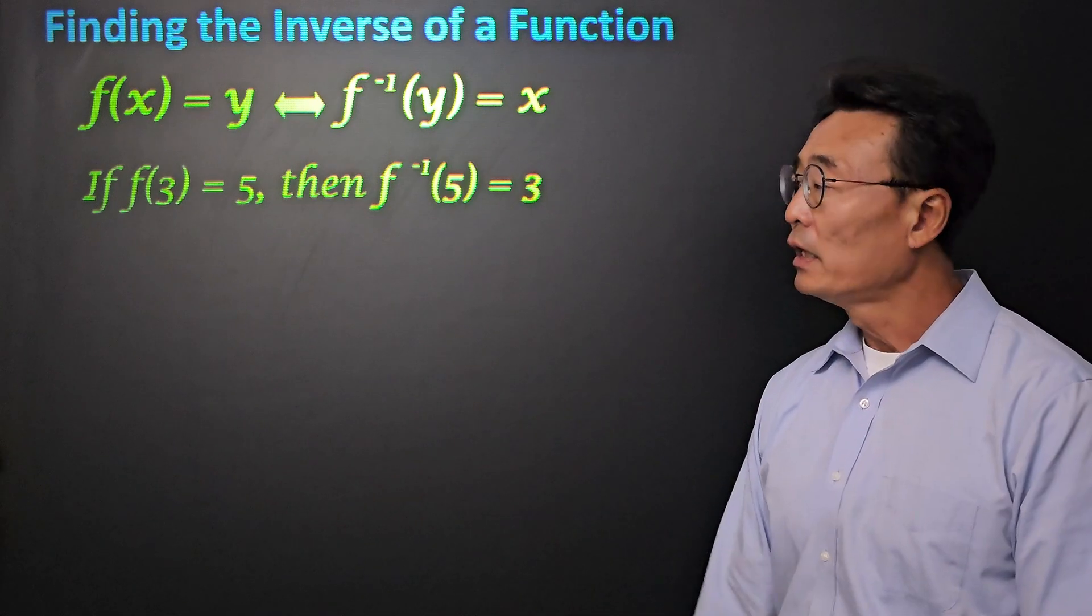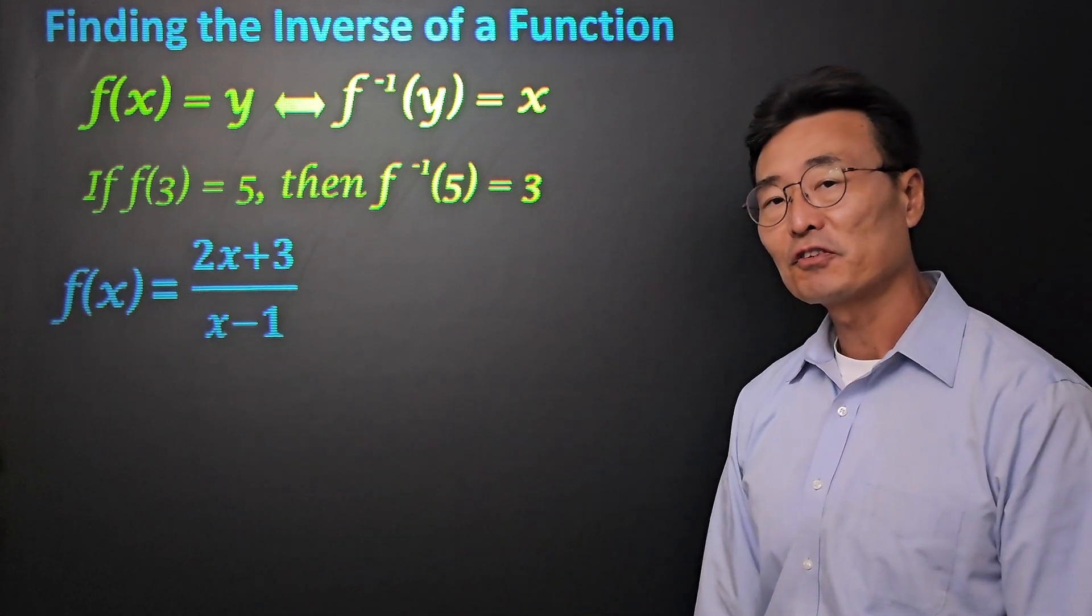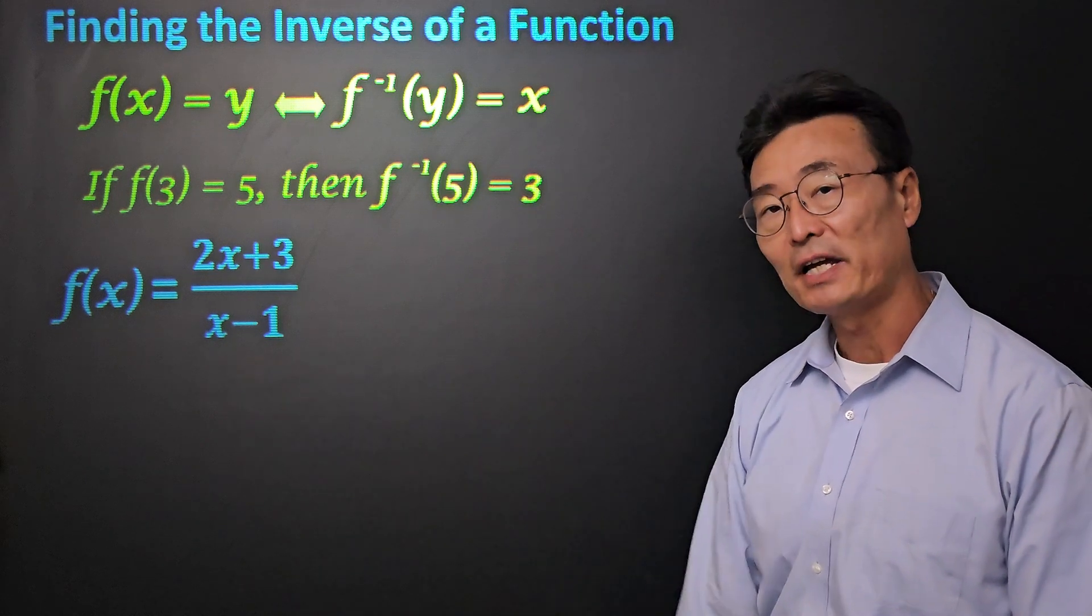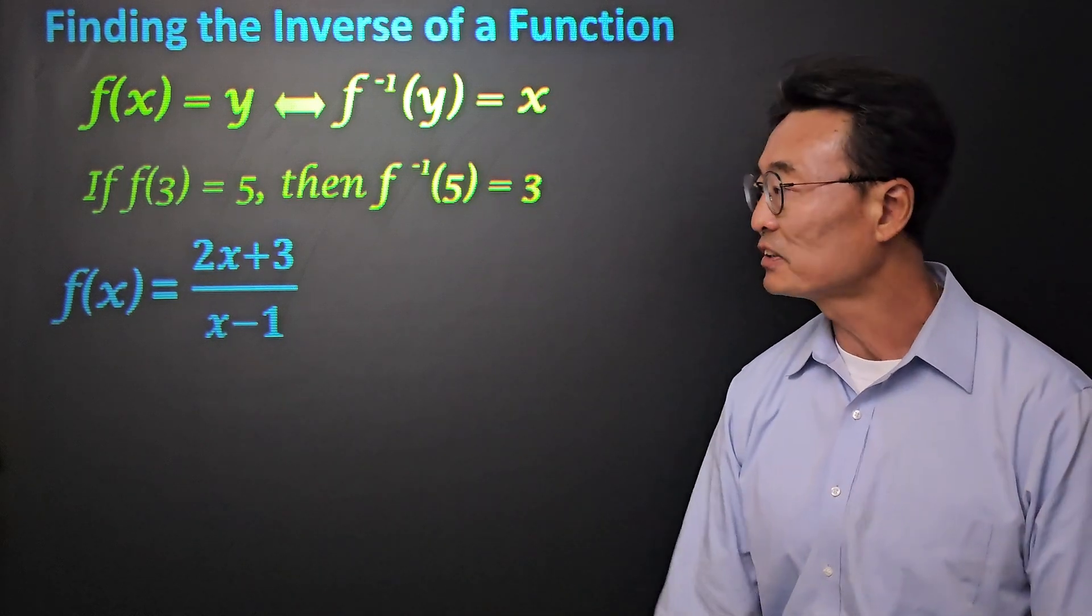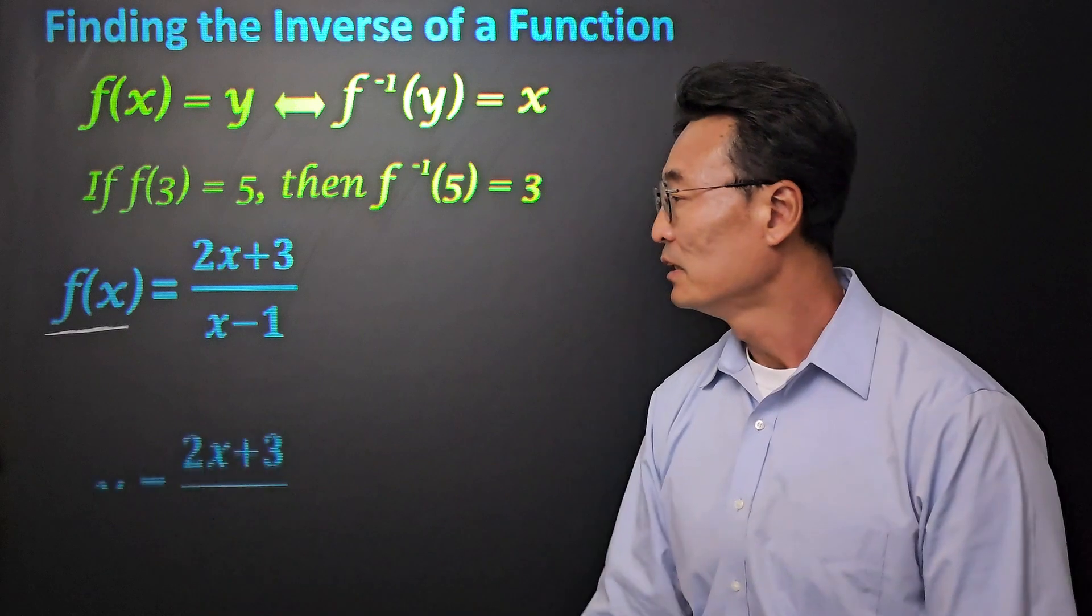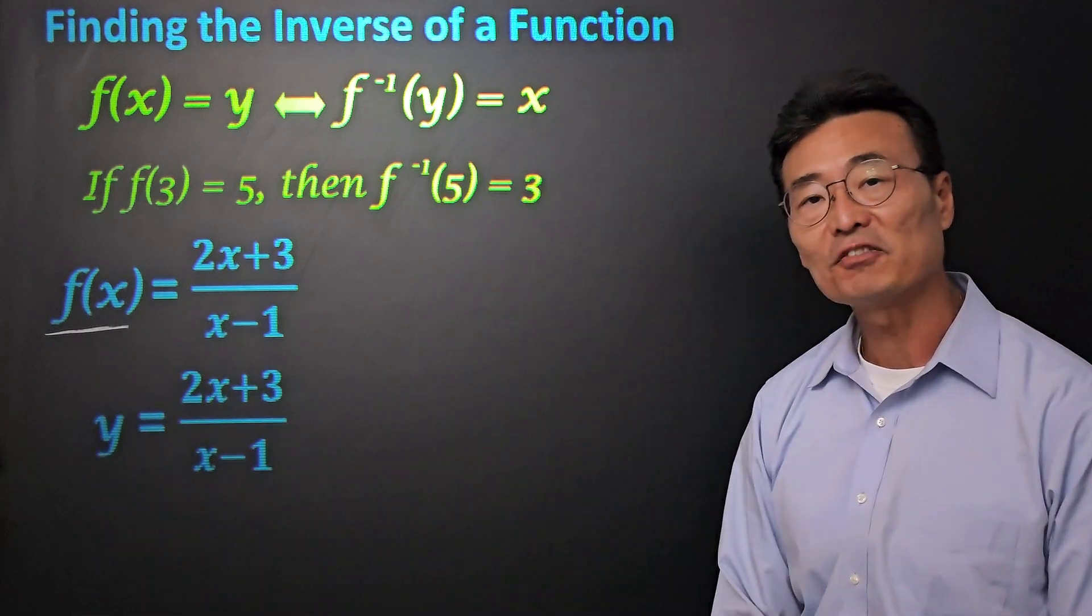Now for the problem. If we have f of x equals 2x plus 3 over x minus 1, the first thing we want to do is change that f of x into y.